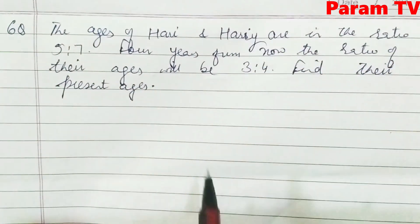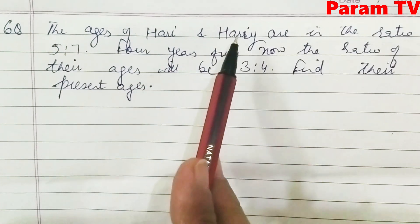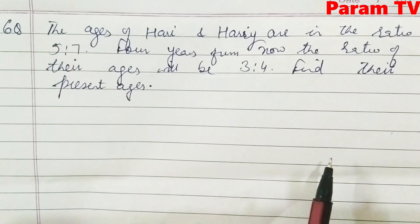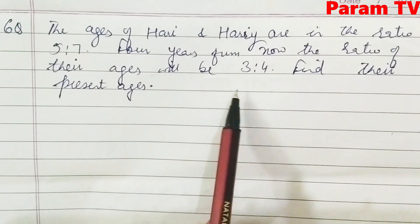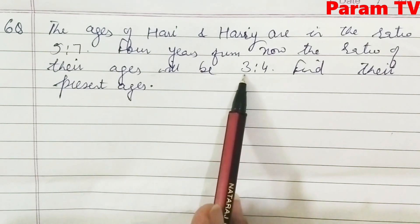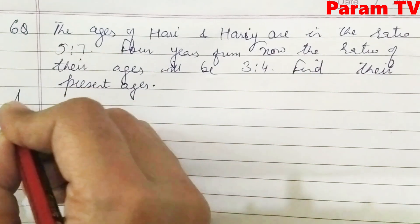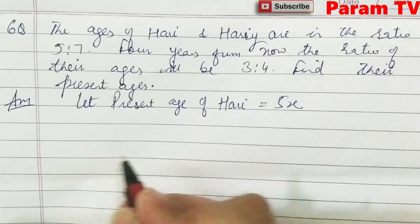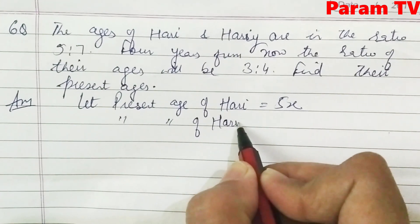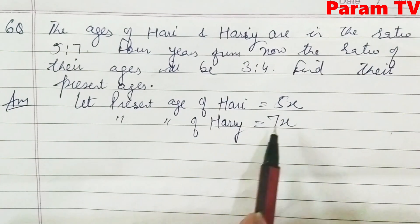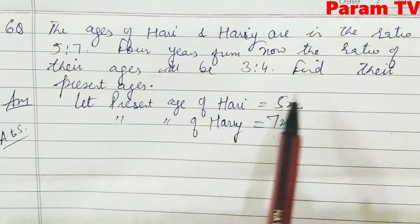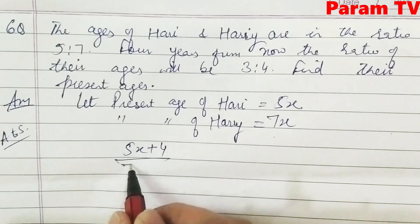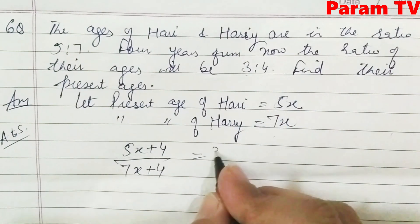Question number 6: The ages of Hari and Harry are in the ratio 5:7. Four years from now, the ratio of their ages will be 3:4. Find their present ages. Let the present age of Hari = 5x and the present age of Harry = 7x. According to the statement, 4 years from now both ages increase by 4, and their ratio becomes 3/4.